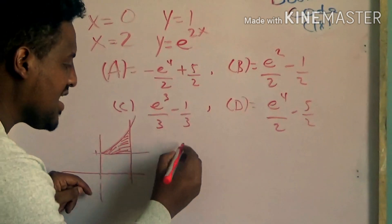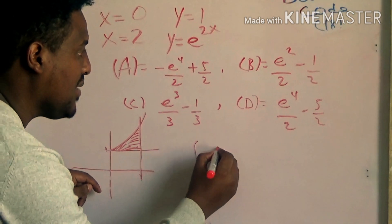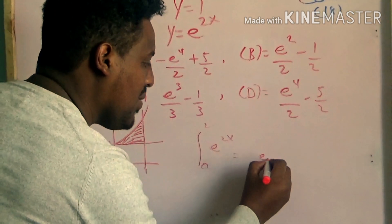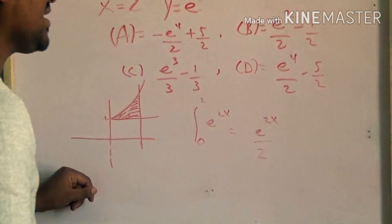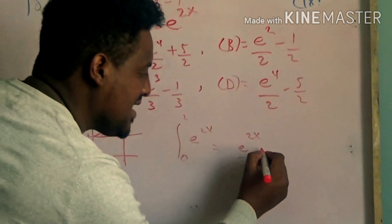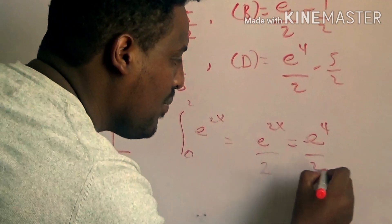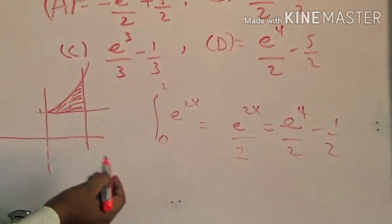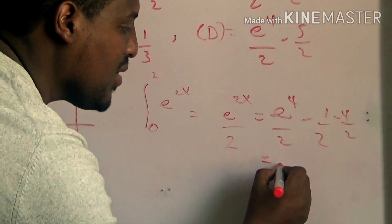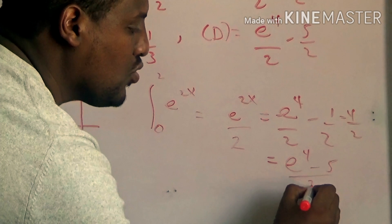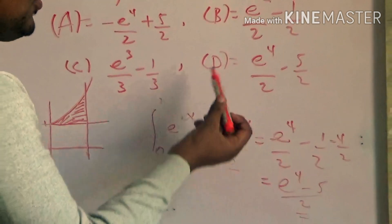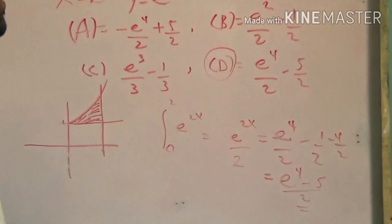The area of integration is a power of 2x from 0 to 2. If the power of 2x is integrated, the result is 1 over 2 times x squared. So it is 1 over 2. At x equals 2: 4 over 2. So it is 4 over 2 minus 1 over 2. We get 4 minus 5 over 2. Taking out: 4 over 2 minus 5 over 2, which is answer D. So we get 3 over 2.